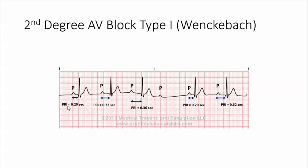You notice that the PRI gets longer and then finally it doesn't conduct the impulse to the ventricles. That's why there's no QRS — there's only a P. And then after that, it starts all over again. This is second-degree AV block type 1.